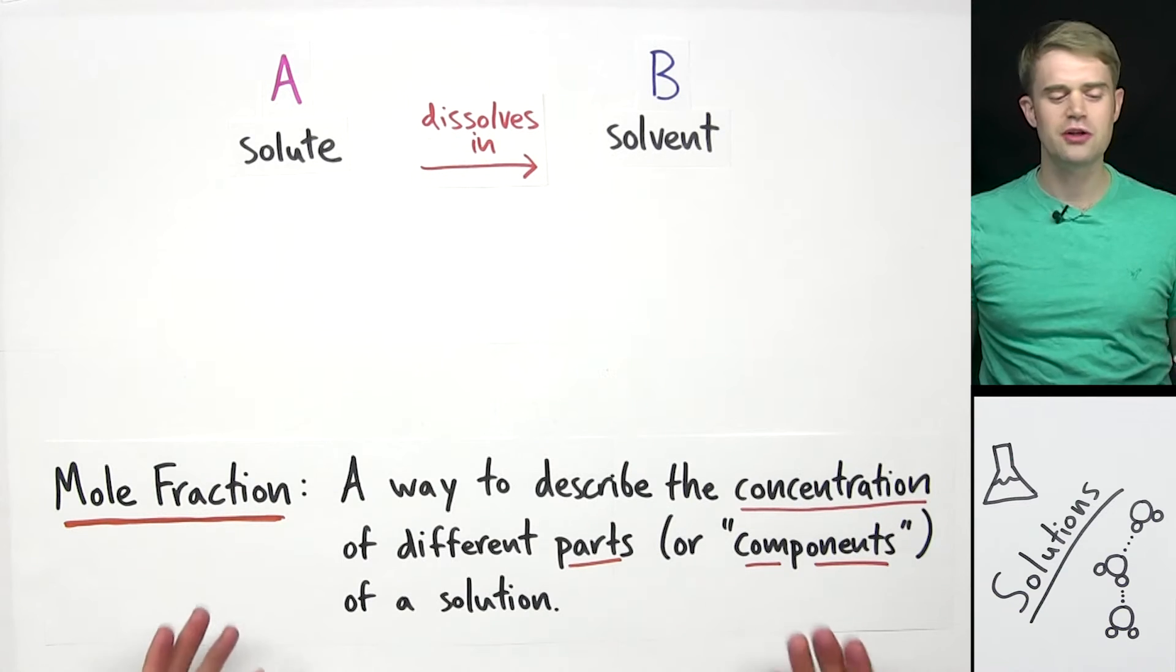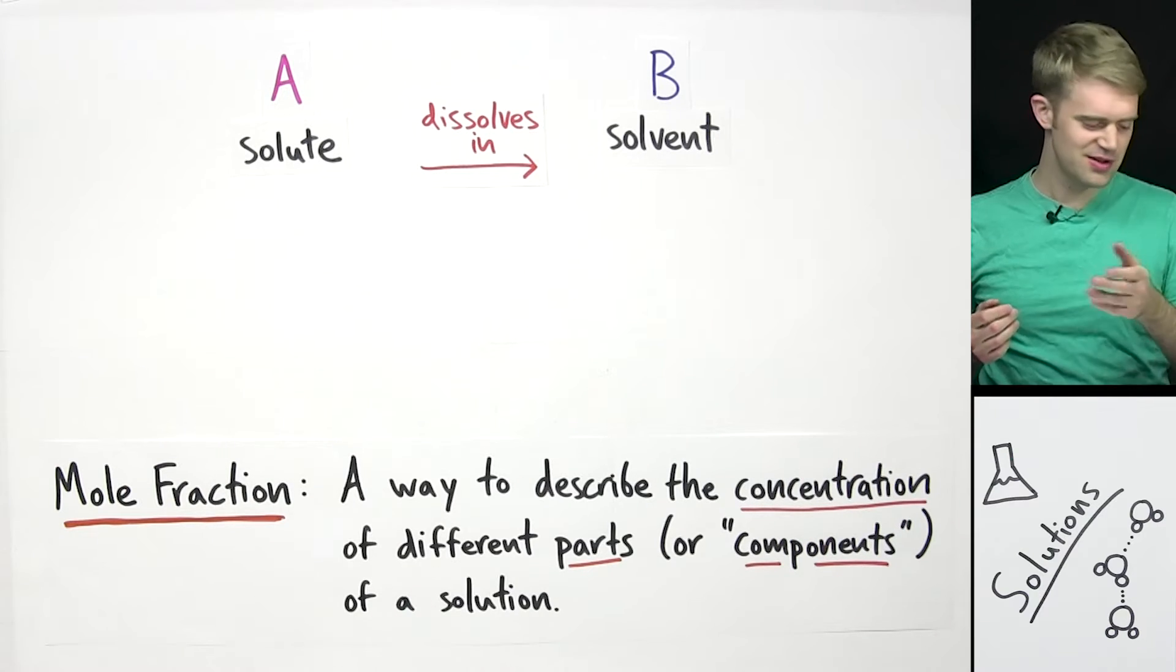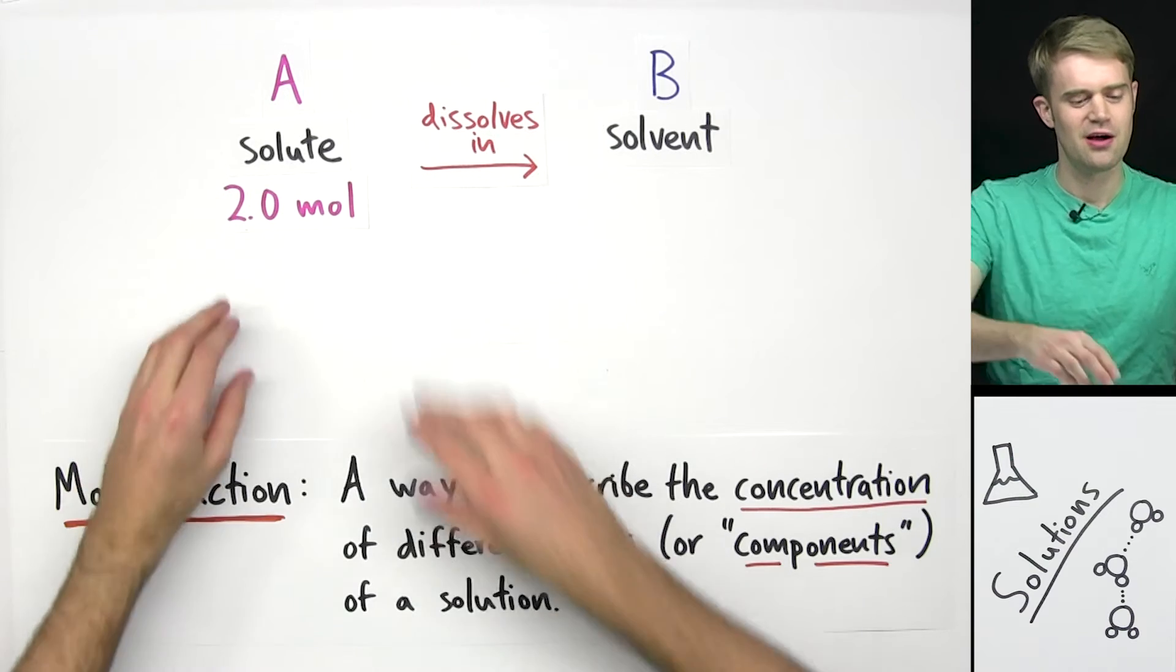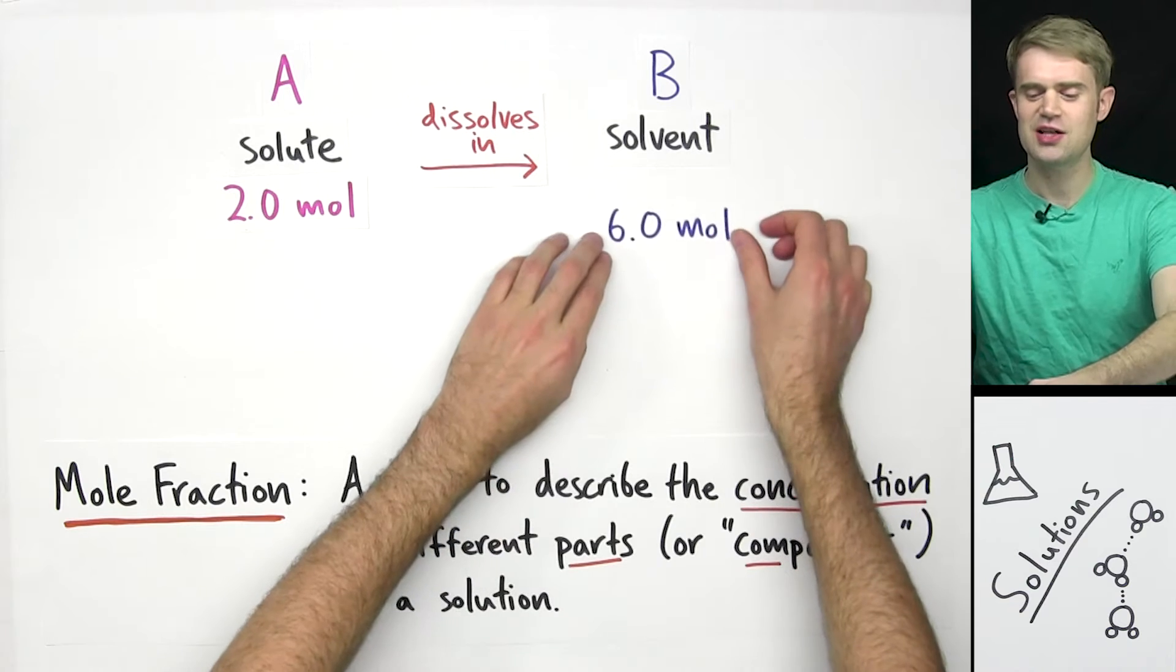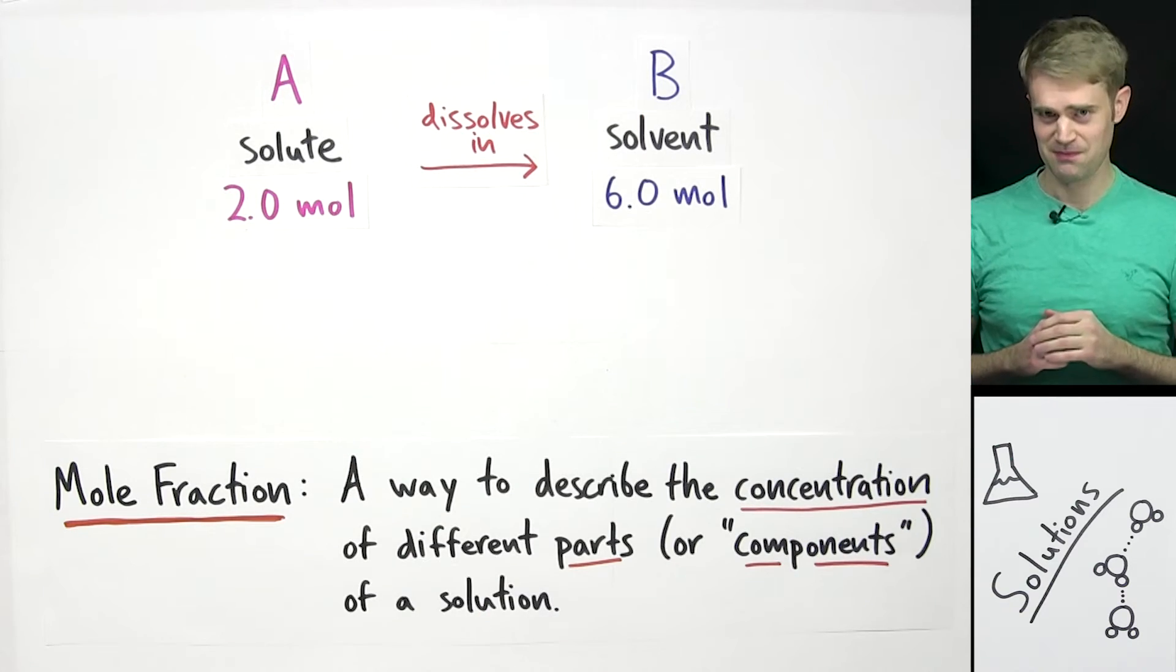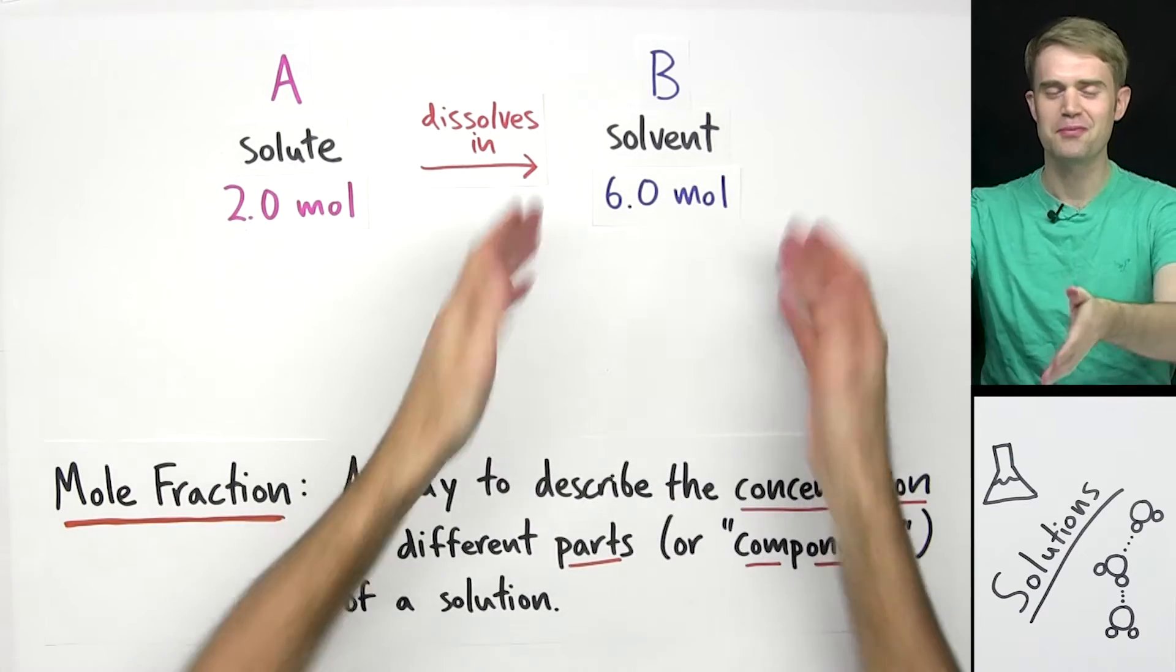In a solution, we usually know how much of each chemical we have or we can figure it out. Now, in this example, we have 2.0 moles of the solute, chemical A, and we have 6.0 moles of the solvent, chemical B. Now, we can calculate mole fraction for either A or for B.